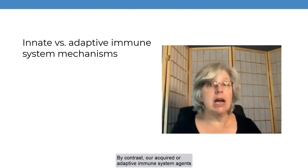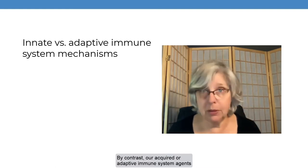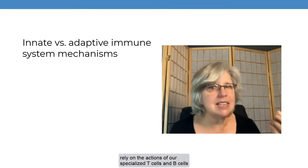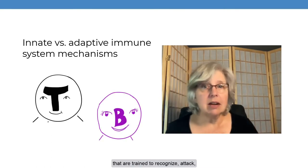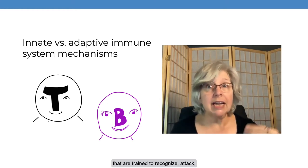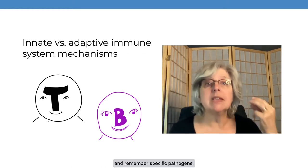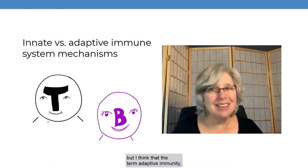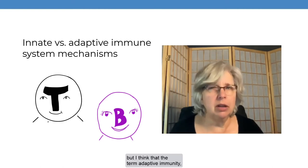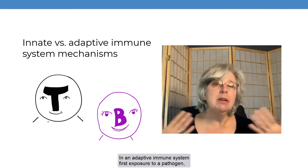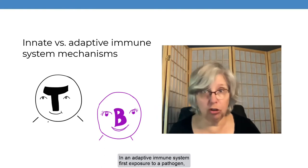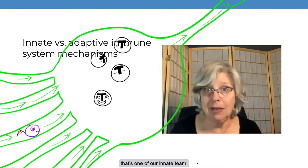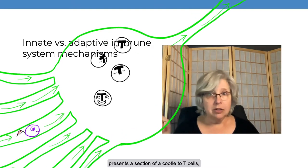By contrast, our acquired or adaptive immune system agents rely on the actions of our specialized T-cells and B-cells that are trained to recognize, attack, and remember specific pathogens. I learned this whole thing as "specific immunity," but I think that the term "adaptive immunity" really is better. In an adaptive immune system, first exposure to a pathogen — a nonspecific white blood cell, that's one of our innate team — presents a section of a pathogen to T-cells.